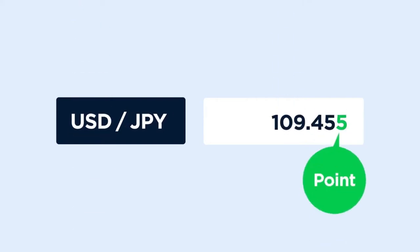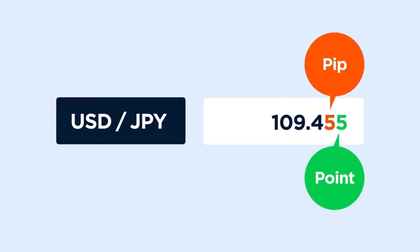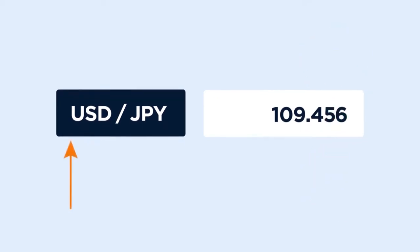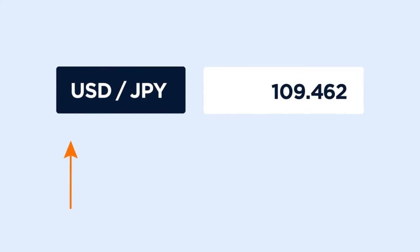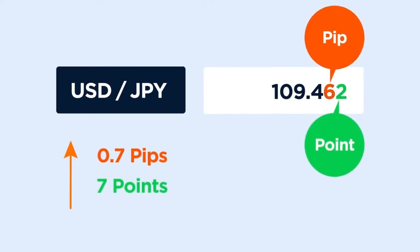Quotes generally have 5-digit pricing, except those pairs with Japanese Yen, which have 3-digit pricing — for example, US dollar / Japanese Yen. In this case, the last digit stands for a point and the second to last is a PIP. A change from 109.455 to 109.462 means that the price has increased by 0.7 pips or 7 points.